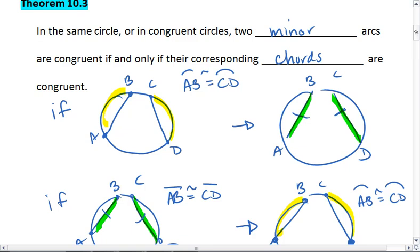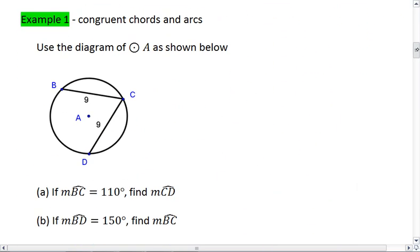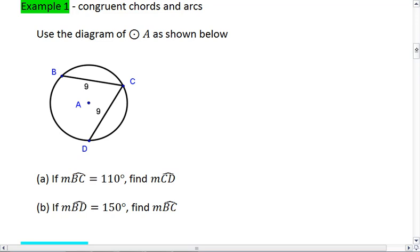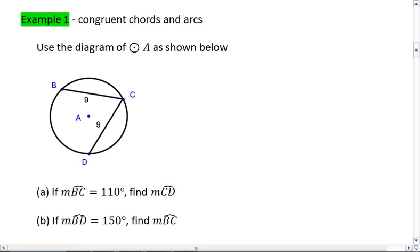Let's look at an example. Example one, congruent chords and arcs. We're going to use the diagram of circle A as shown below to answer the following questions. First thing first, in our circle we notice that BC is congruent to CD. So the chords BC and CD are congruent, which means their corresponding minor arcs are also congruent. So arc BC is congruent to arc CD.